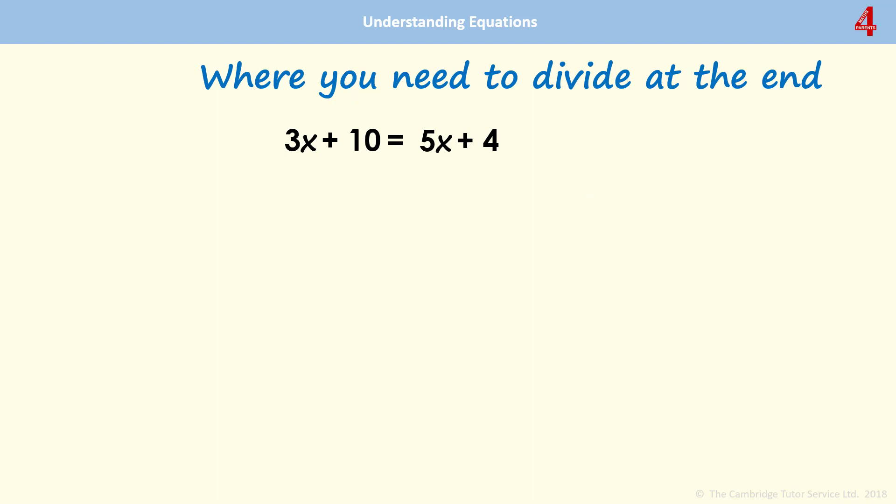Here's another one to try, and if you want to pause the video and have a go at this. 3x plus 10 is the same as 5x plus 4. 4 is the smallest of my extra numbers. So I'm going to take that away from both sides. So I have 3x plus 6 is the same as 5x.